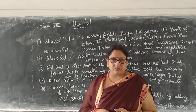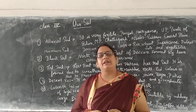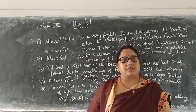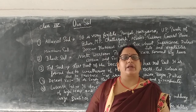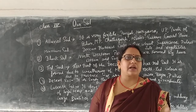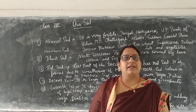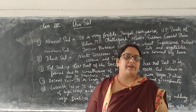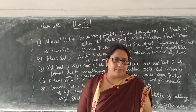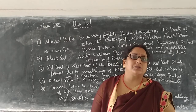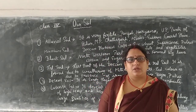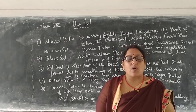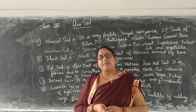Soil is different in different places because of different physical features and climate. For example, the soil of a desert is different compared to that of a mountain. You should also know it takes hundreds to thousands of years to make just one centimeter of soil. So, soil takes too much time to be formed and is a very important part of life.